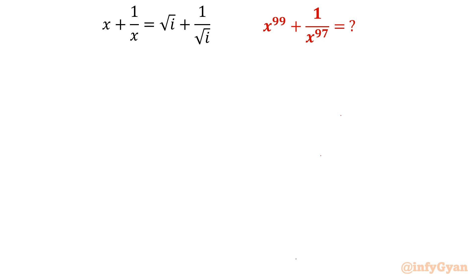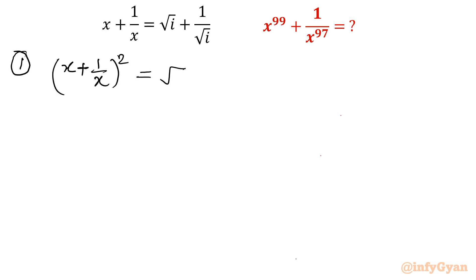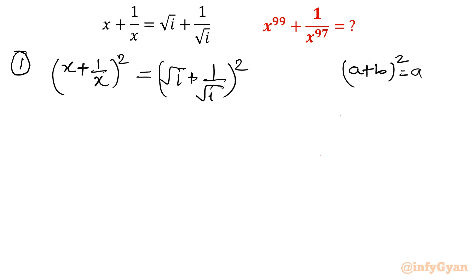I will solve — I will simplify — by two methods. See method number 1. I am going to take the whole square directly. So I will write: x plus 1 over x, whole square, equals square root of i plus 1 over square root of i, whole square.